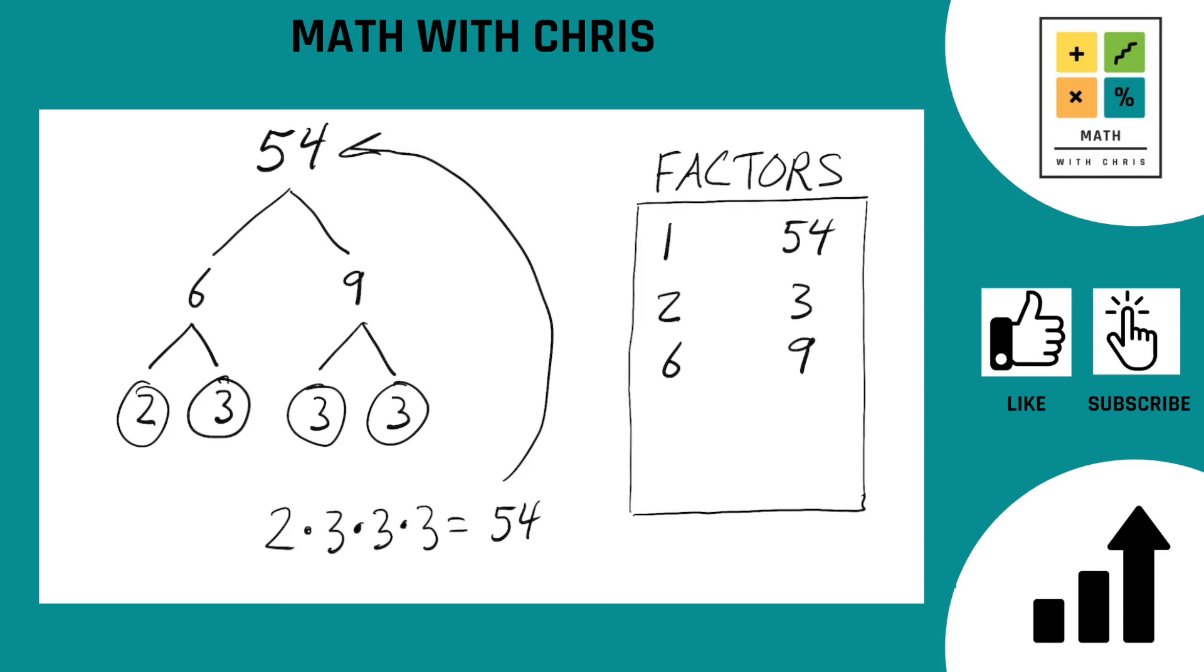And now the last thing we need to do is come down here, take a look at our prime factors. And is there any other combination we can multiply here to get a new number that's not in the factor bank yet? Well, let's check it out. 2 times 3 gives us 6. We already got that. What about 3 times 3? 3 times 3 is 9. We already got that.